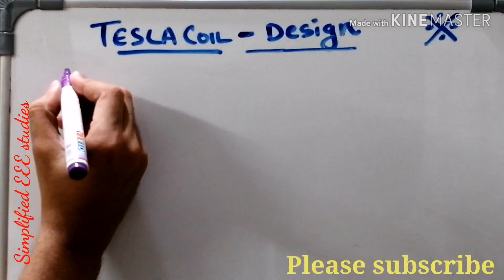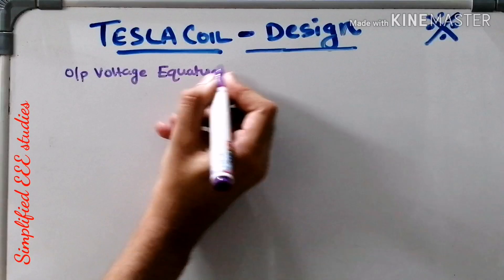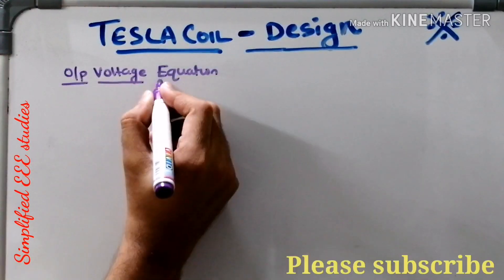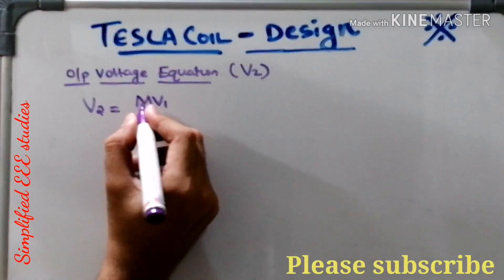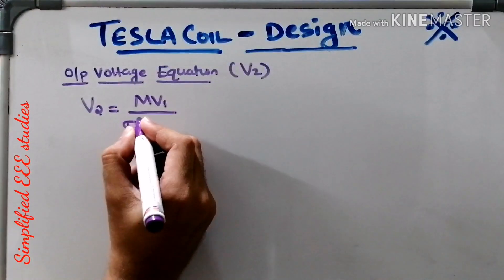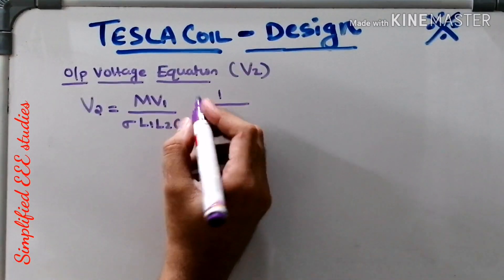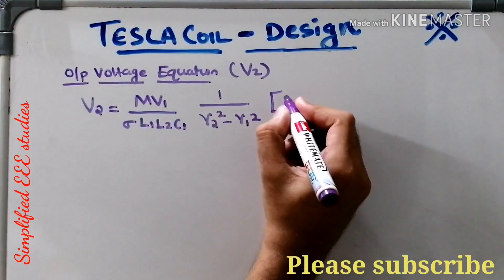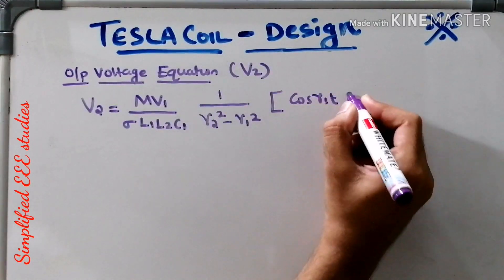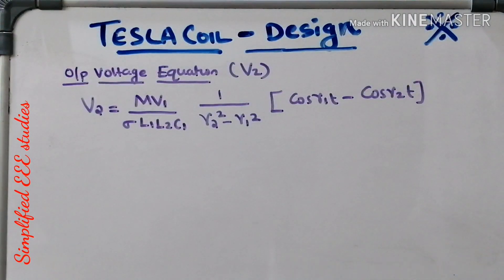The first one is the output voltage equation of a Tesla coil. The output voltage is denoted by V2. It is given by M times V1, divided by sigma times L1 times L2 times C1, multiplied by 1 over (gamma 2 squared minus gamma 1 squared), into (cos gamma 1 T minus cos gamma 2 T). This is the output equation of the Tesla coil.